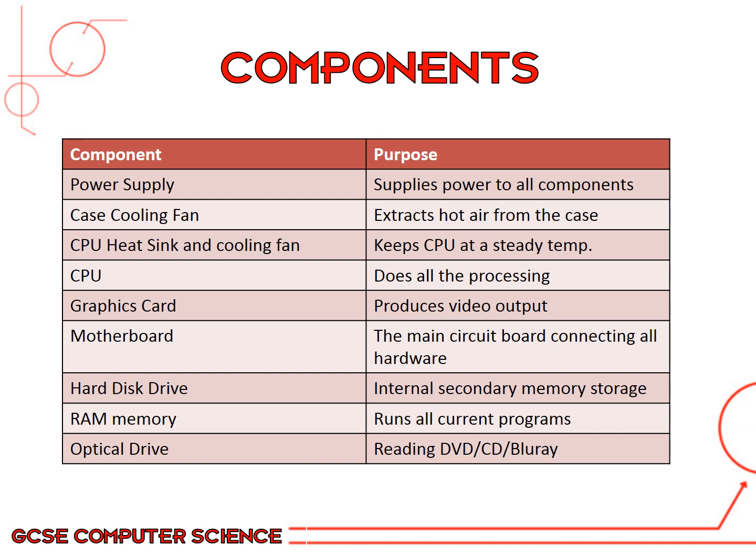The motherboard is the main circuit board, which is what everything gets plugged into. You've got a hard disk drive, which is internal secondary memory storage where all of your files, programs and applications are stored. You've also got RAM memory, which is where all of your currently running programs are kept. And then you might have an optical drive, which is a little bit less common now, but it's used to read DVD, CD and Blu-ray discs.